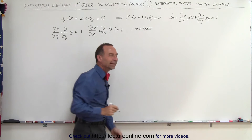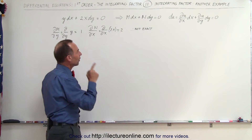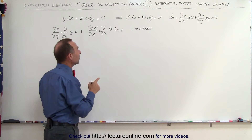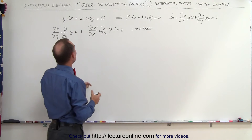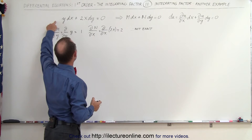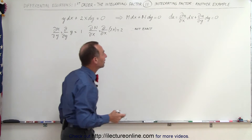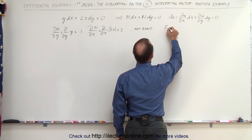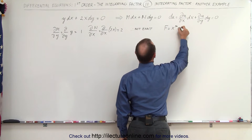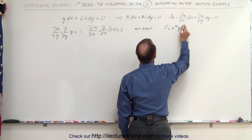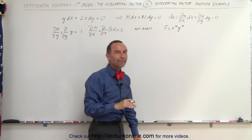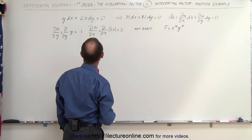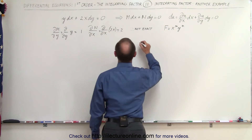So now we have to find an integrating factor. We're going to multiply both sides of the equation by a general integrating factor x to the m times y to the n. Let f equal x^m times y^n, and all we have to do is find the appropriate m and n to get the appropriate integrating factor.